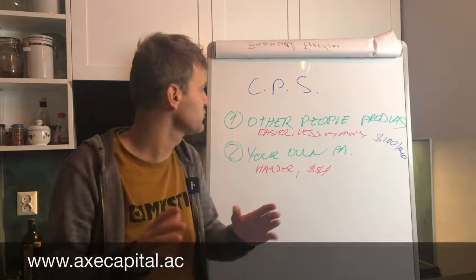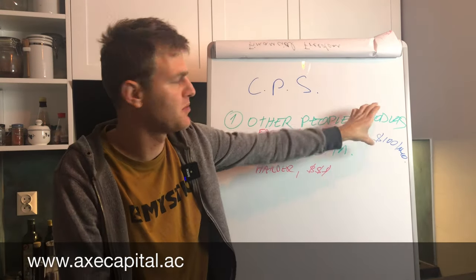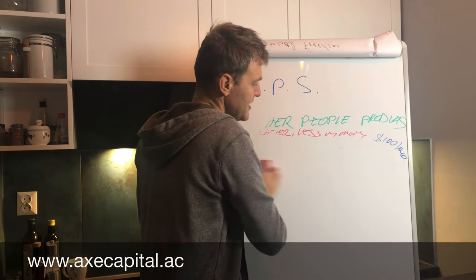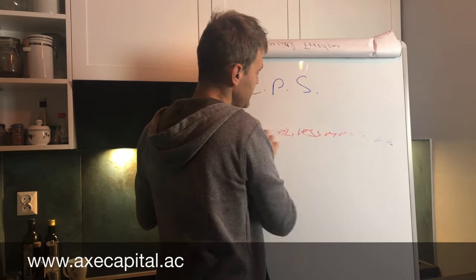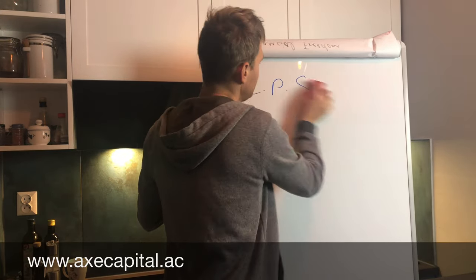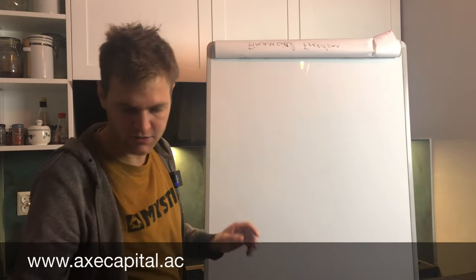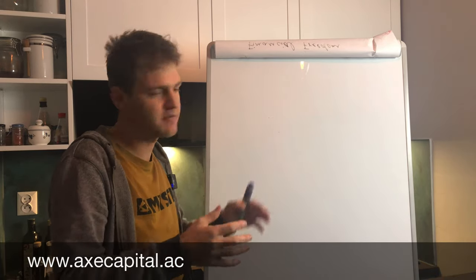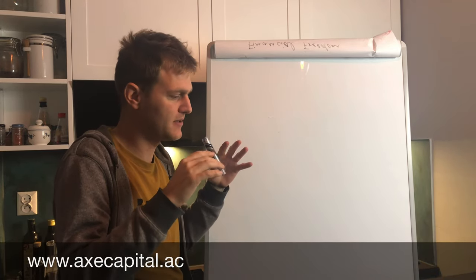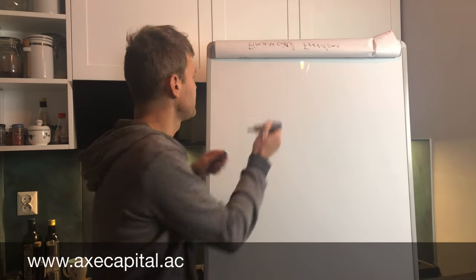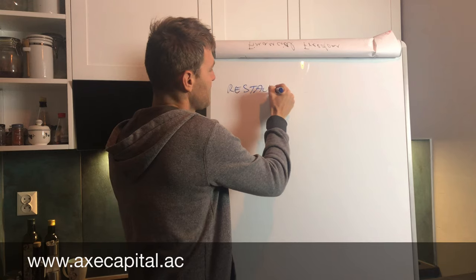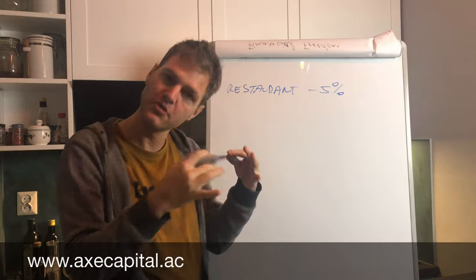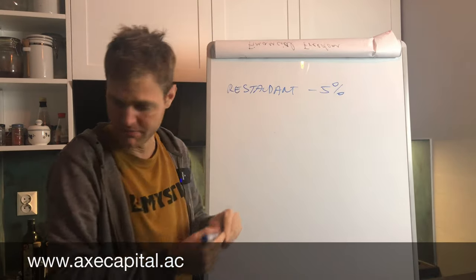Now I will show you two ways how to promote other people products. First will be for example how you can start to promote restaurant but you can do it in whatever niche you like. You have restaurant, you have some followers already and you will negotiate with the restaurant. They will give you like a tracking code, some discount for people.